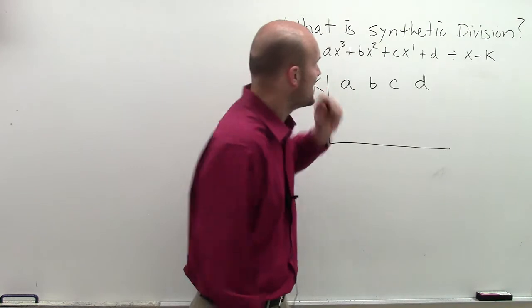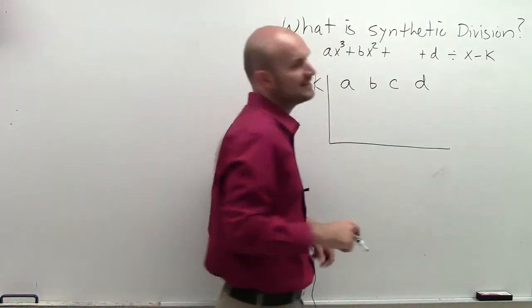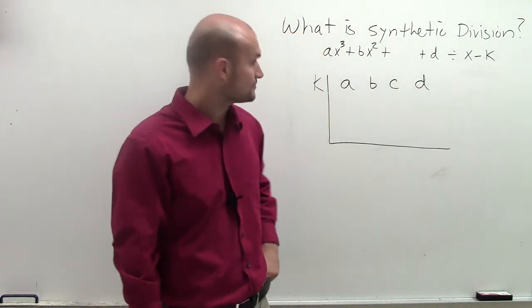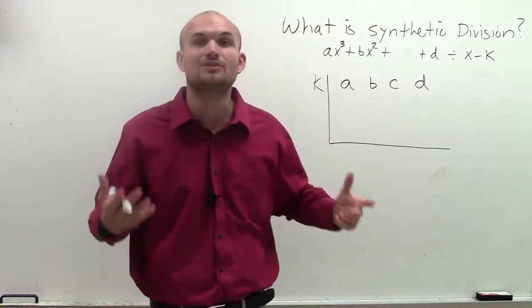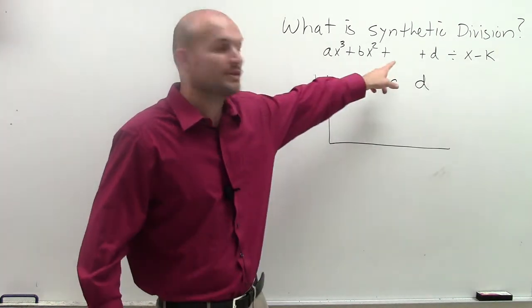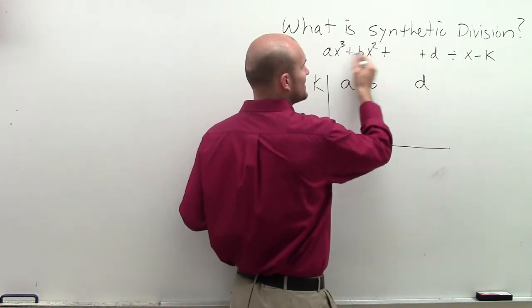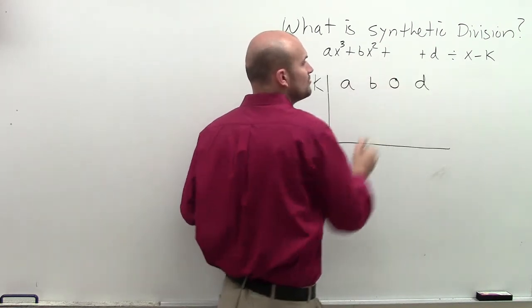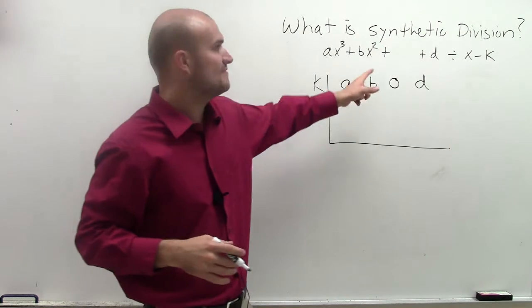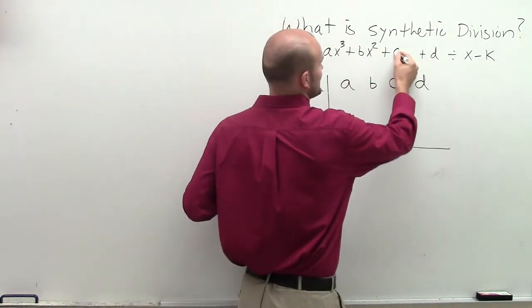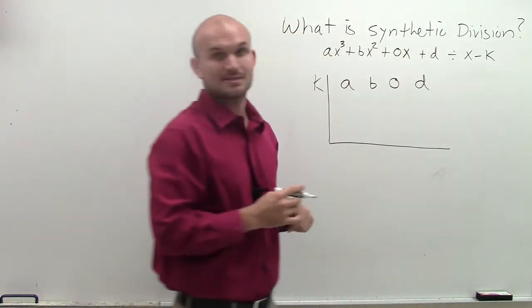Now, let's pretend I didn't have a linear term there. If I don't have a linear term, we still need to have that place value for the linear term x. So what I'd do, if I didn't have a c, if I just had a polynomial that looked like this, you're going to put a 0 in front of there. Because that's the value of c. Because really, you could say 0 times x.